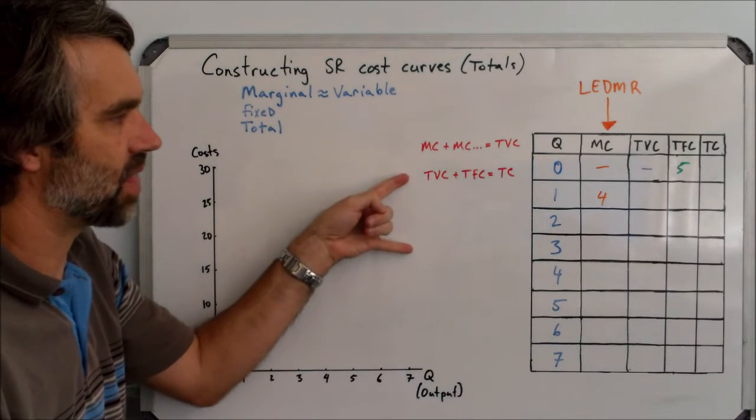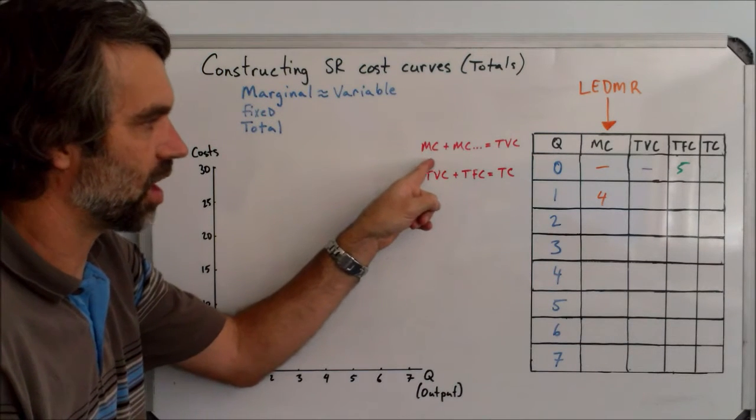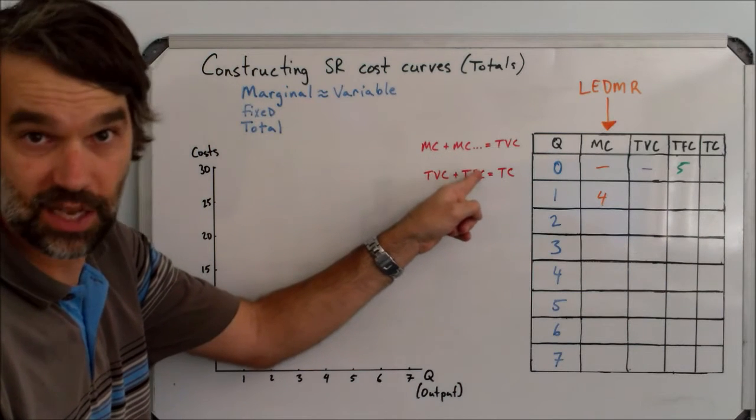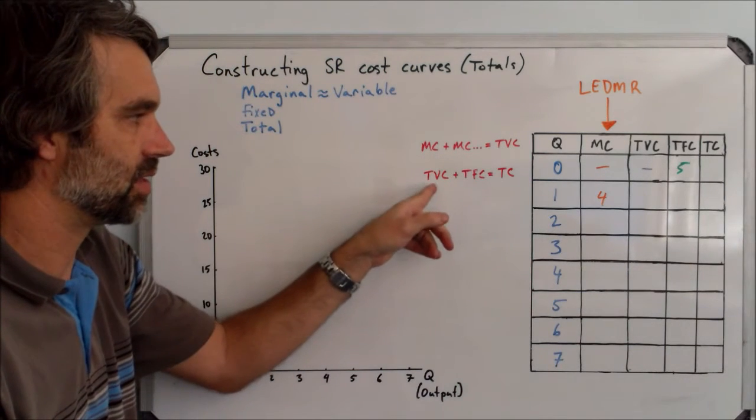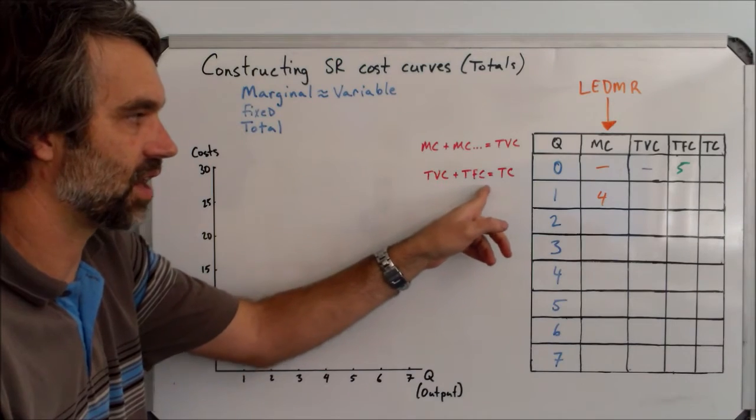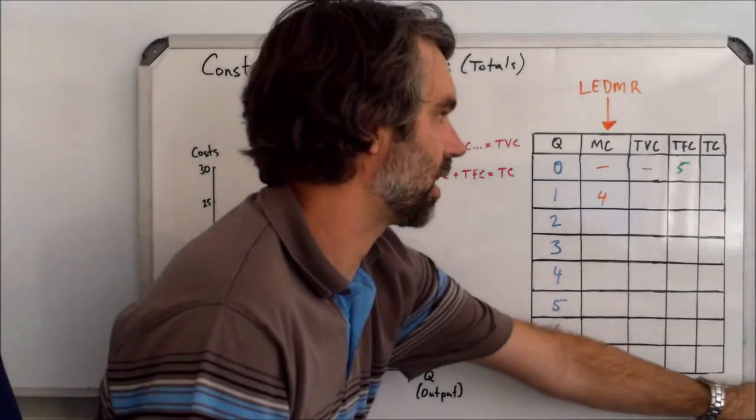You see some math on that here. So marginal cost plus marginal cost equals the total variable cost. And then total variable cost plus total fixed cost equals the total cost.